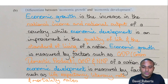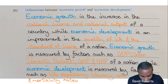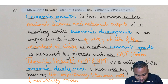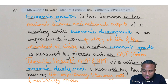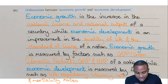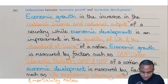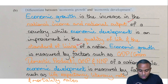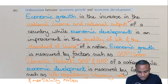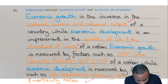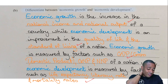They want us to differentiate between economic growth and economic development for four marks. First: economic growth is the increase in the national income and national output of a country, while economic development is the improvement in quality of life and standard of living of a nation — that's one mark each. Second: economic growth is measured by factors such as GDP (Gross Domestic Product), GNP (Gross National Product), and NNP (Net National Product), while economic development is measured by factors such as life expectancy, literacy rate, and mortality rates — that's our four marks.